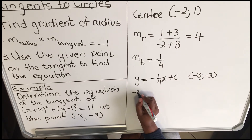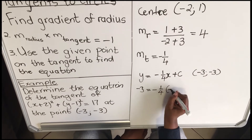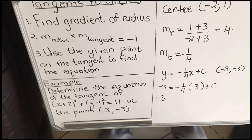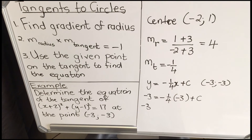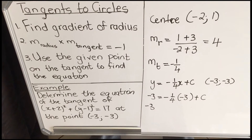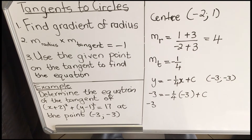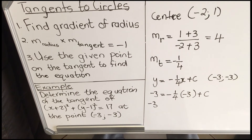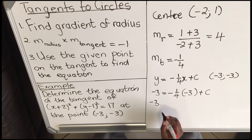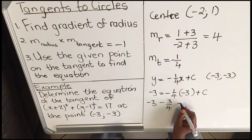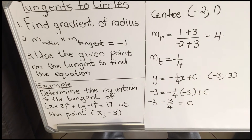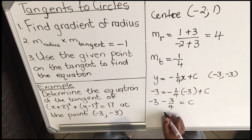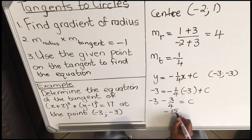My y is −3, so: −3 = (−1/4)(−3) + c. Use the calculator for that. You get −1/4 multiplied by −3, which gives positive 3/4. When you take it to the other side it becomes negative, so: c = −3 − 3/4, which gives c = −15/4.